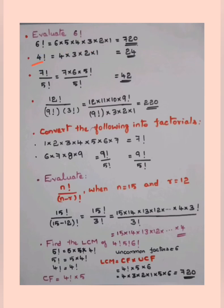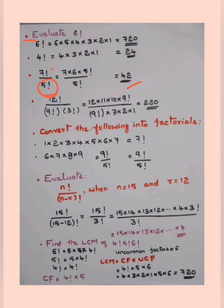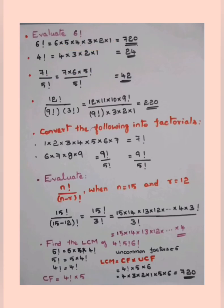If it is 7!/5!, when you have factorials in both numerator and denominator, check the denominator first. Here the denominator is 5!, which is smaller than the numerator. So write 7! as 7 × 6 × 5!, then divide by 5!. The 5! cancels, and you just multiply 7 × 6 to get the answer.